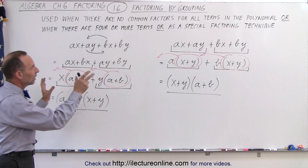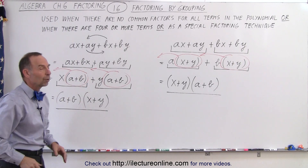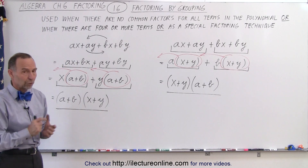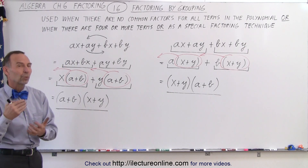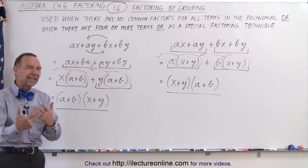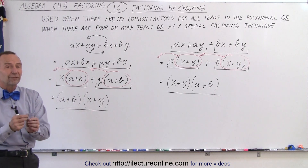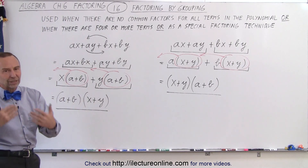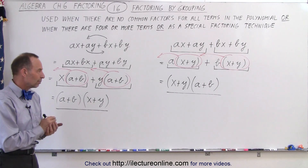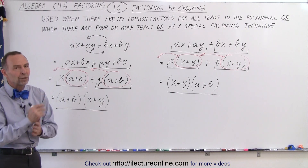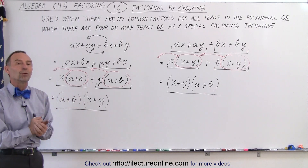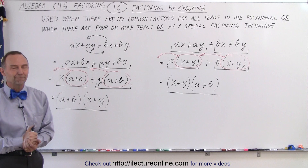By grouping them differently we still end up with the very same result, which is always going to be the case. It doesn't matter how you group them — you're always going to get the correct result. Sometimes you'll try to group them one way and not get anywhere, then try a different way and find the solution. Just be assured that it really doesn't matter which way you group them, as long as you group them and factor out the common factors from each group — and that is how it's done.